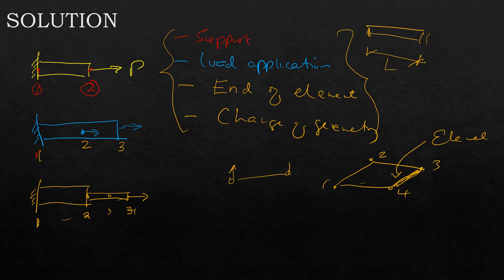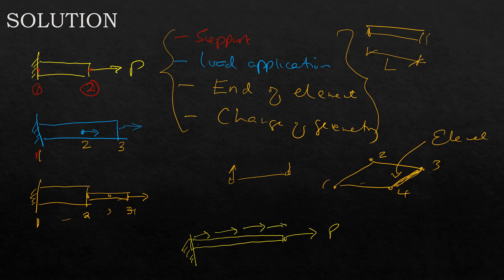Before I leave, let me give you a small challenge. Assume we have a bar fixed on one end, with a point load applied at some location, and also a uniformly distributed load q (in kN/m) along the bar. How do we locate the nodes and discretize this element? Think about that and share your views in the comment section. Until the next tutorial — bye bye, keep liking, subscribing, and sharing. Thank you.